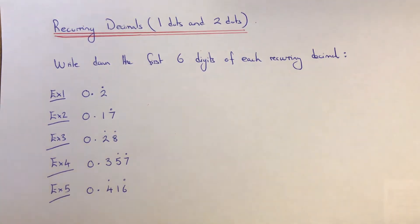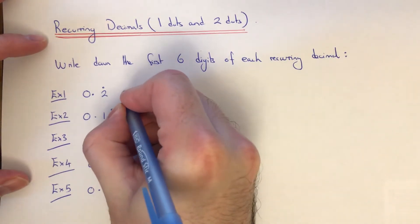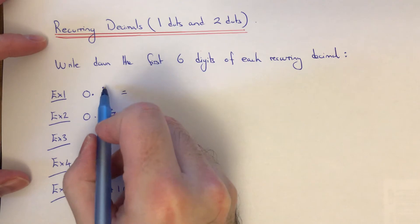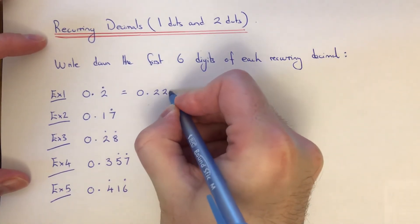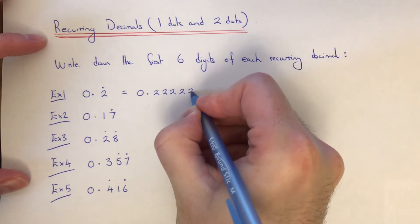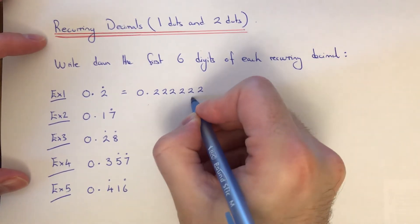Let's go through these six examples to show you what I mean. We've got to write down the first six digits of each recurring decimal. This first one just has one dot, so that just means the two gets repeated at the end.